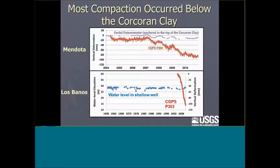We know compaction is occurring mostly beneath the Corcoran clay because we have an extensometer anchored at the top of the Corcoran clay, paired with a continuous GPS station nearby. The data shows most compaction is happening below the Corcoran clay, with nothing happening above it. That's near Mendota. Another line of evidence from Los Banos shows water levels in the shallow well are pretty flat, yet we still see subsidence, indicating that shallow system stress is not driving the compaction.